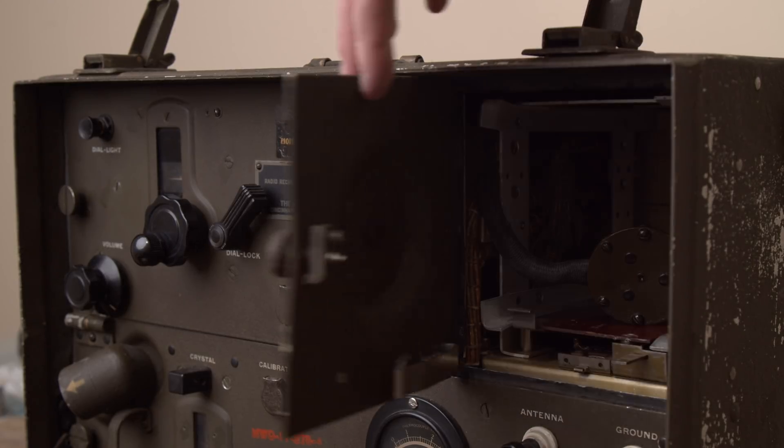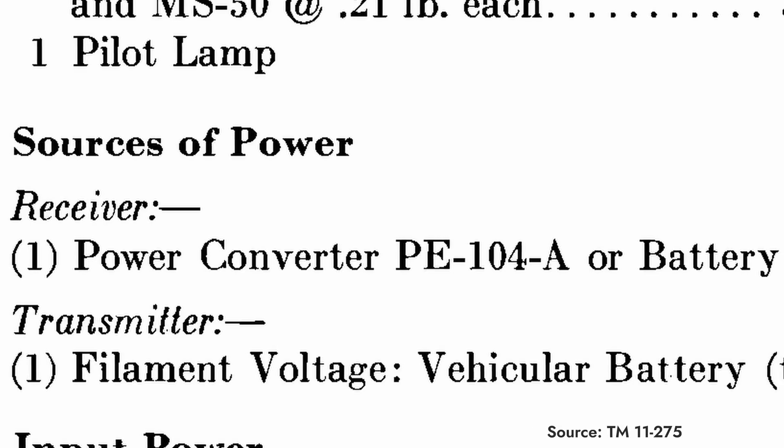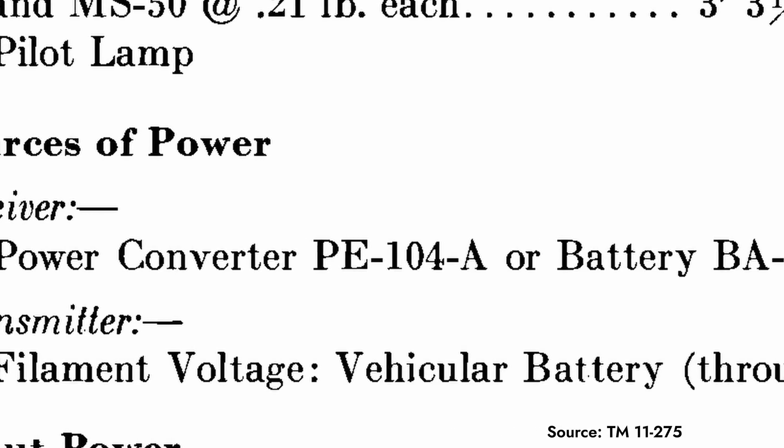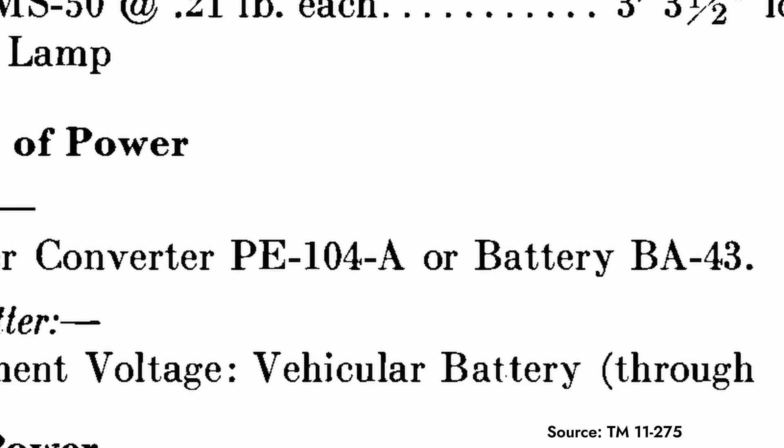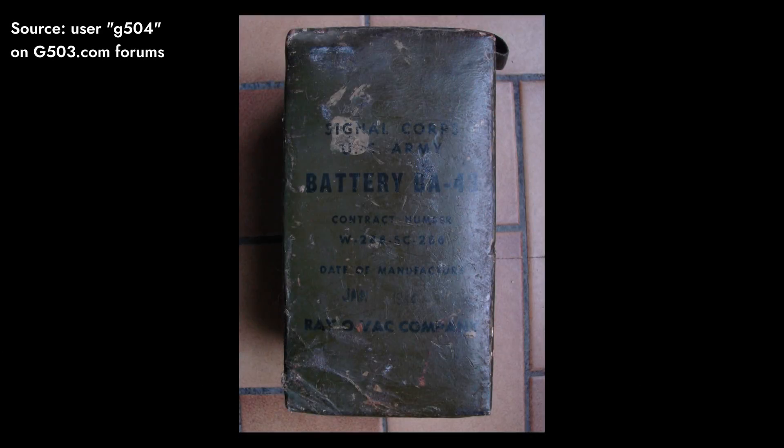The BC-654 gets its receiver voltages from a power supply mounted in the upper right corner of the device. As I covered in my last video, one could choose to install either a battery pack or an electromechanical switching mode supply. Today, I want to make a working replica of the original battery, model BA-43.